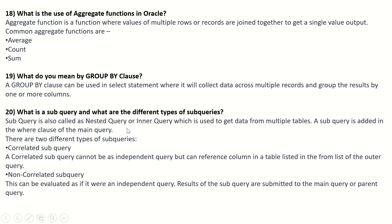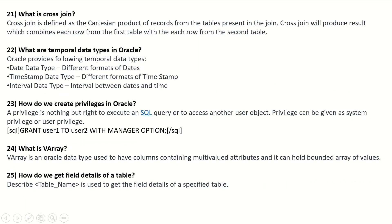What is a subquery and what are the different types? A subquery, also called a nested query or inner query, is used to get data from multiple tables. A subquery is added in the WHERE clause of the main query. There are two types: correlated subquery — cannot be an independent query but can reference columns in the outer query; and non-correlated subquery — can be evaluated as an independent query, with results submitted to the main or parent query.